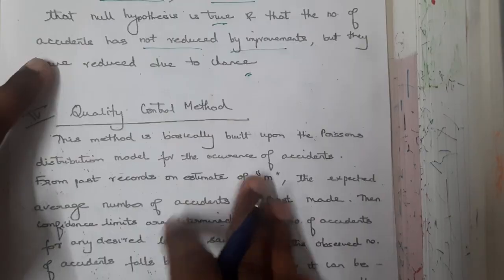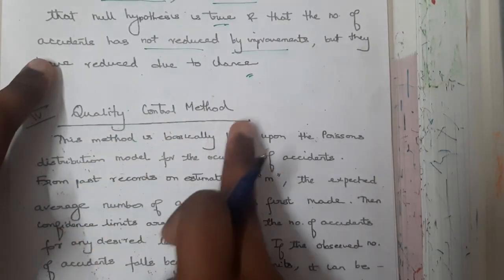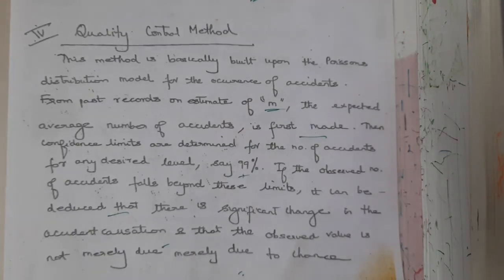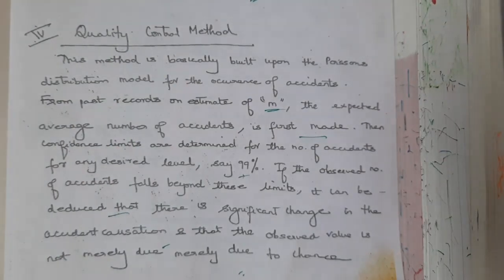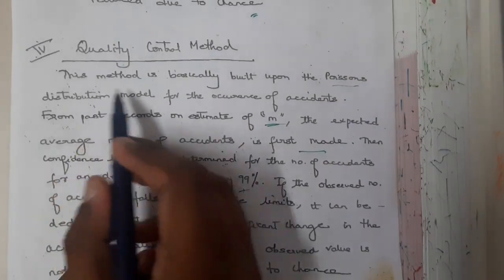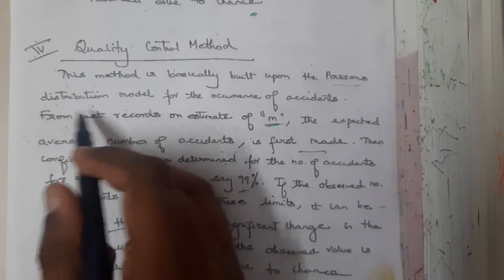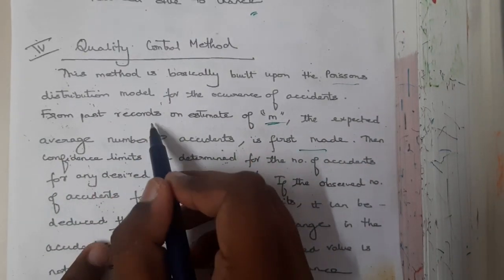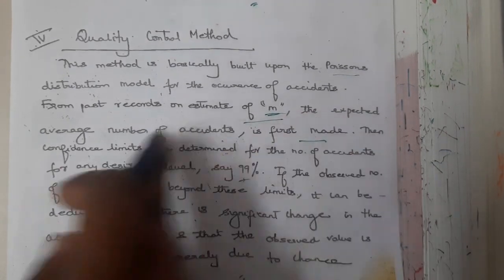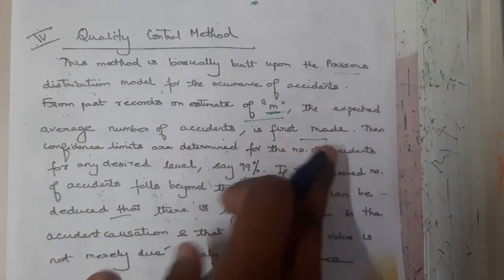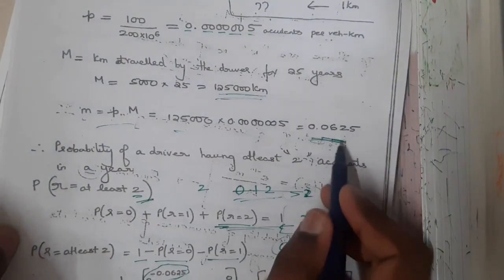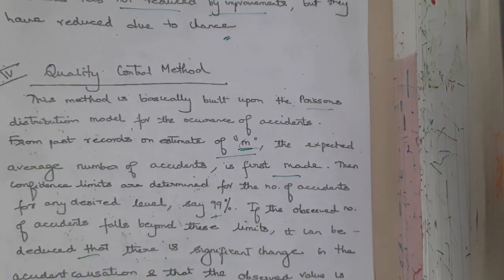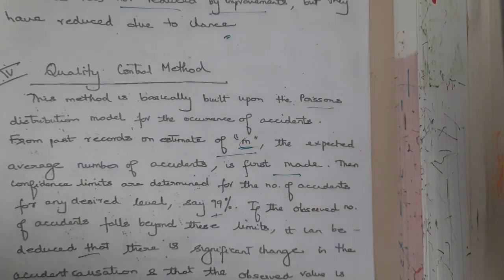The last method is the quality control method, which is almost similar to Poisson distribution. This method is built upon the Poisson distribution model for occurrence of accidents, using past records to estimate m — the expected average number of accidents. If that value is accurate then it is fine; if not, we check further.